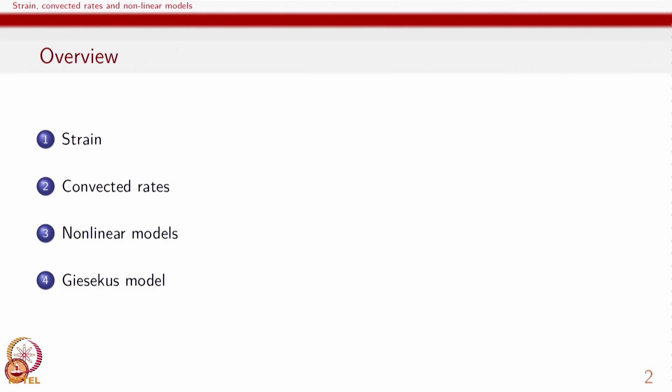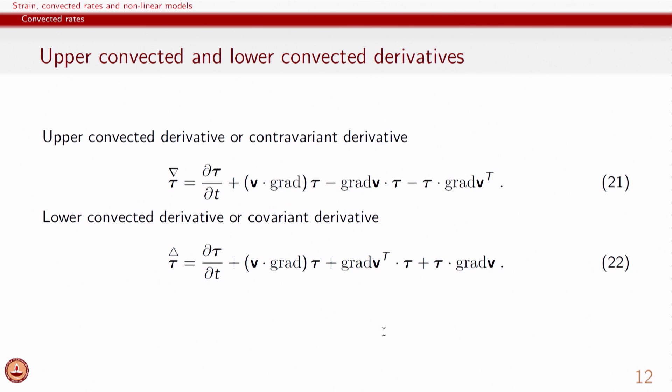Generally in rheological discussion, the overall finite strain tensors may not be as common as they are in discussion of nonlinear response of solid-like materials. In this lecture, continuing on, we will define the convected rates and then look at some examples of nonlinear models, and then finish up with the overall governing equation for Giesekus model as well as its response. Let us look at the convected rates — given that the overall description of the material can be done using convected base vectors and convected coordinates.